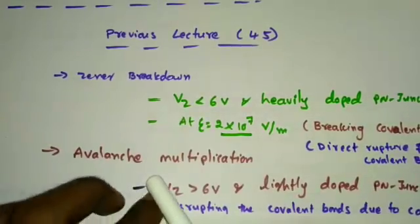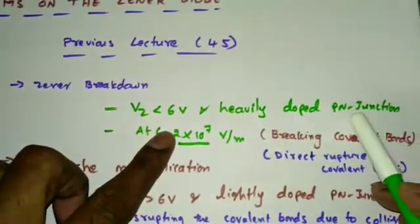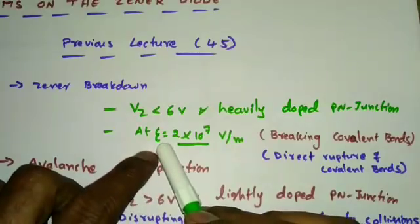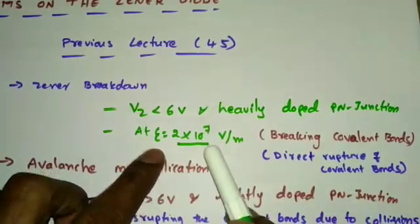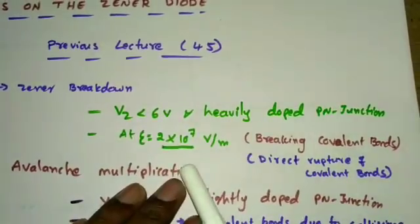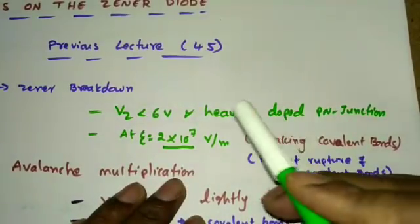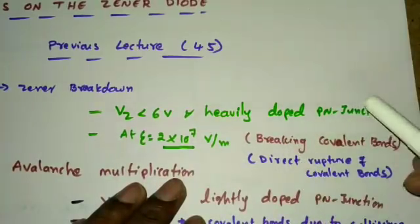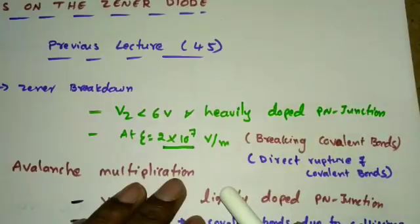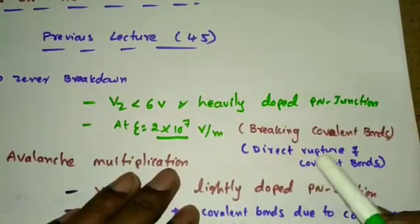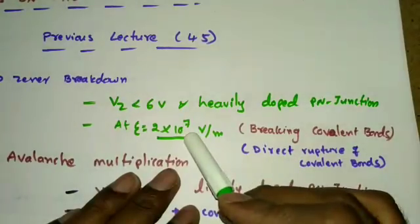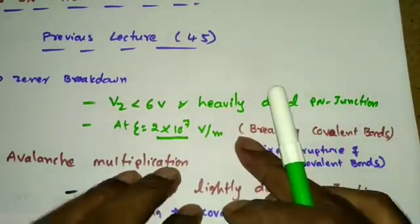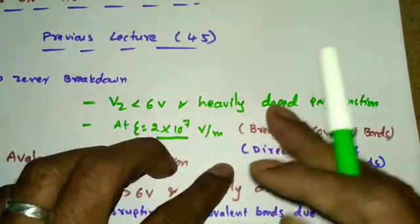Zener breakdown occurs when the Zener diode voltage is less than 6 volts and the p-n junction is heavily doped. This mechanism occurs at approximately an electric field of 2×10⁷ V/m. Due to this heavily doped p-n junction, a high electric field is produced sufficient to directly rupture the covalent bonds in the n-type and p-type semiconductor materials.